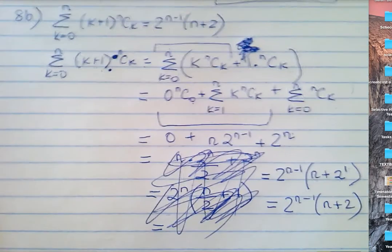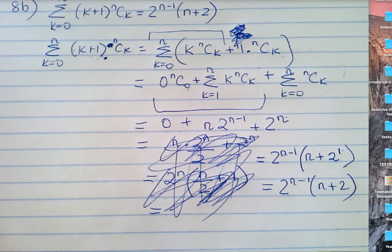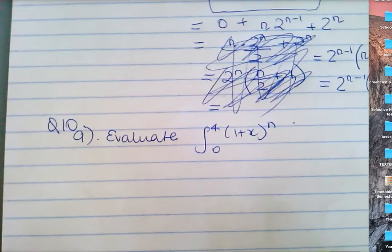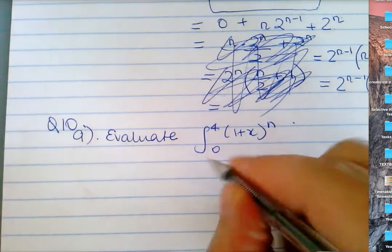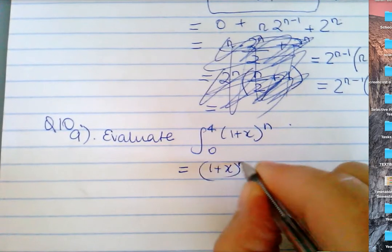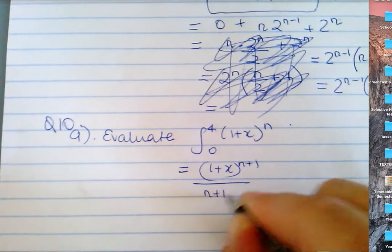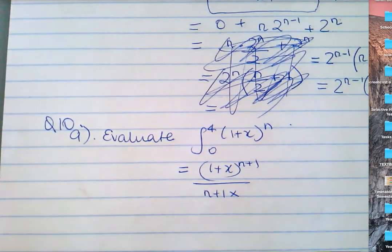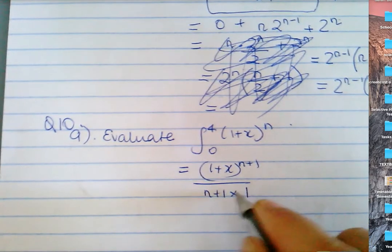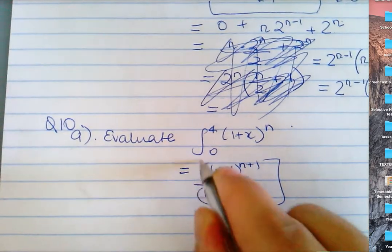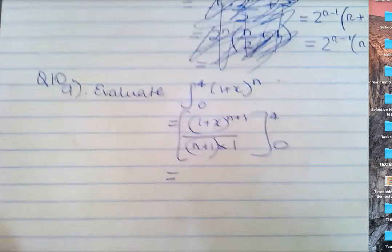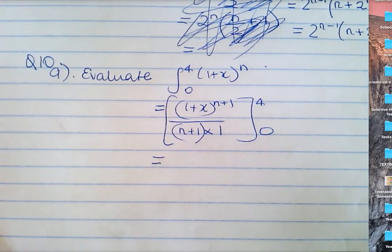Pretty much, if it says hence, you need to use the prior result. For question 10, integrate 1 plus x to the n. What do you get? One plus x to the n plus one over n plus one times the coefficient of x, which is one. Then substitute between four and zero. Question 10a asked you to evaluate that.